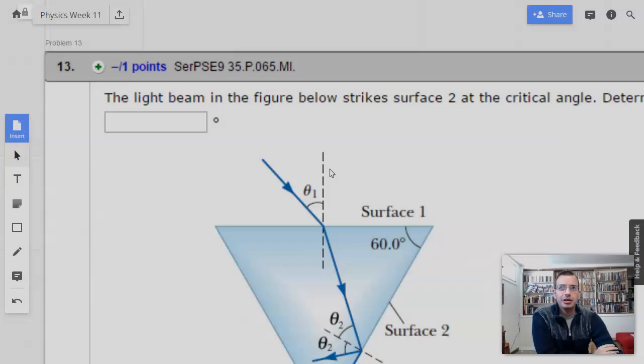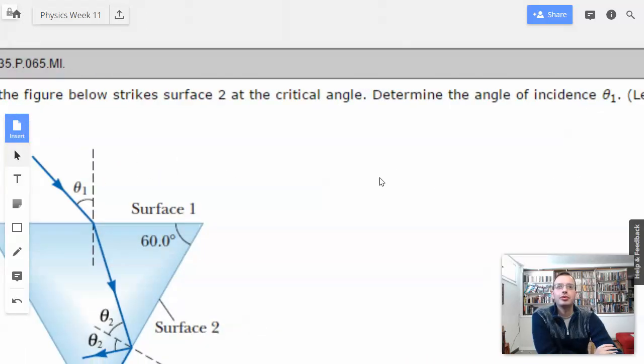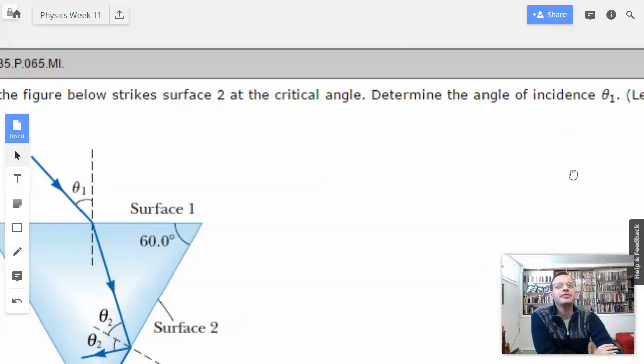Week 11, problem 13. The light beam in the figure below strikes surface 2, that surface right there, at the critical angle. Determine the angle of incidence.